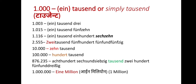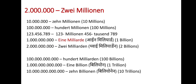For numbers beyond 6 digits, we move towards millions. 1 million is 'eine Million'. For multiple millions: 2 is 'zwei Millionen', 10 is 'zehn Millionen', and 100 million is 'hundert Millionen'. The plural form 'Millionen' is used for more than one million.